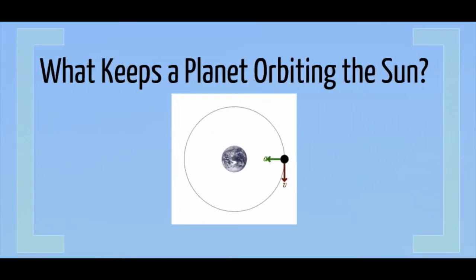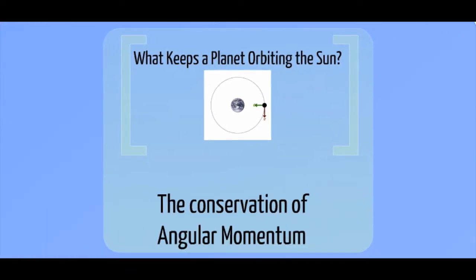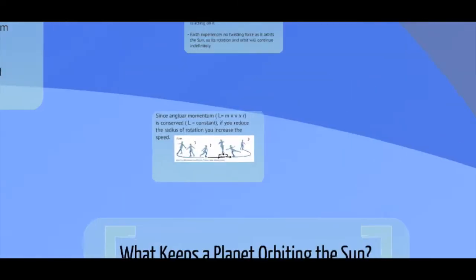So we can apply this to understand what keeps a planet orbiting the sun. And the answer, of course, is going to be the conservation of momentum. In this case, the conservation of angular momentum.